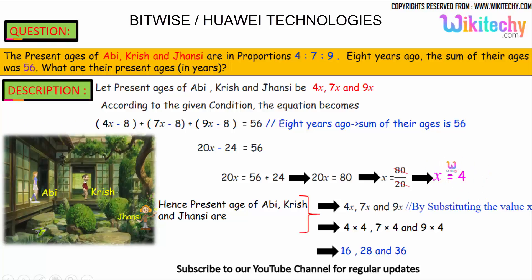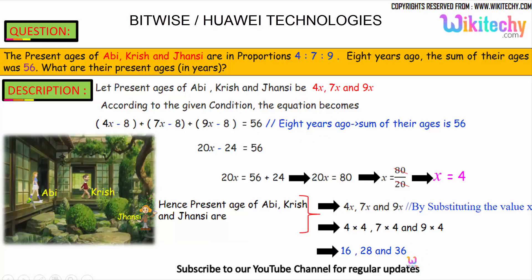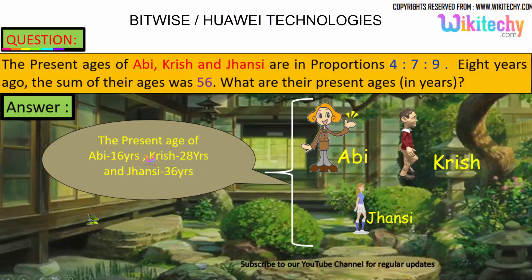The value of x is 4. The present ages are 4x, 7x, and 9x. So: 4×4 = 16, 7×4 = 28, and 9×4 = 36. The present age of Abhi is 16, Krish is 28, and John C. is 36. The final answer is 16, 28, and 36.